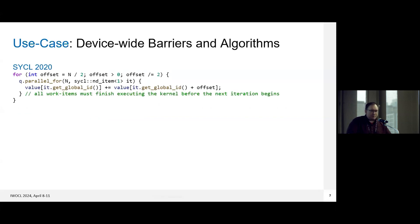So the first use case is around device-wide barriers and algorithms. So in SYCL 2020, you really need a new kernel launch to act as a barrier across all the work groups. And we have a little pseudocode here that could show how you could implement this reduction using log2n kernel calls. So we have basically a loop that calls parallel_for a bunch of times. And after each of these parallel_for calls, there's basically a device-wide synchronization implicitly. But it would be nice if we could write this in a cleaner way that didn't have so many kernel invocations.